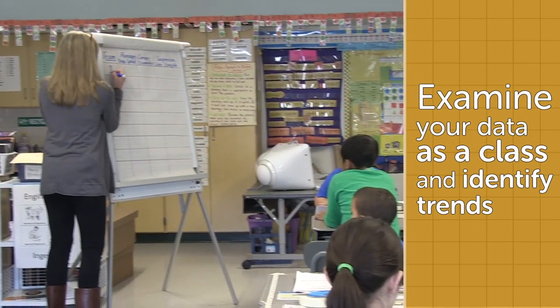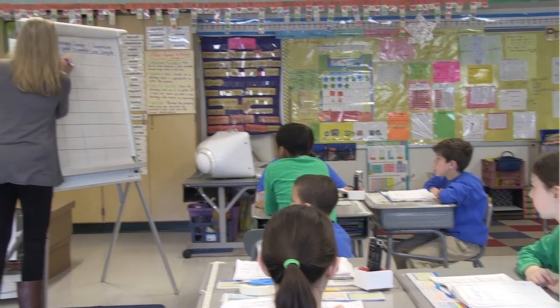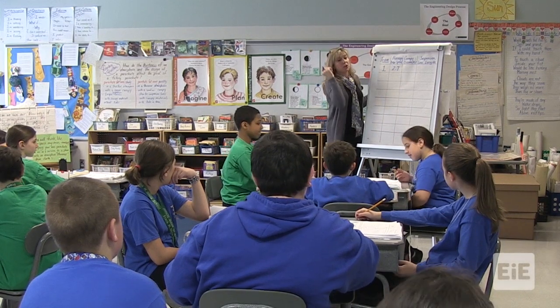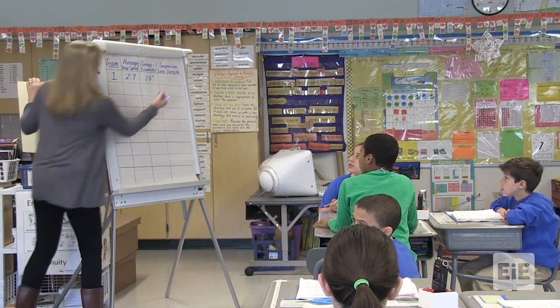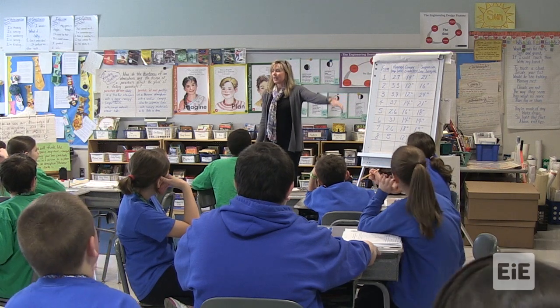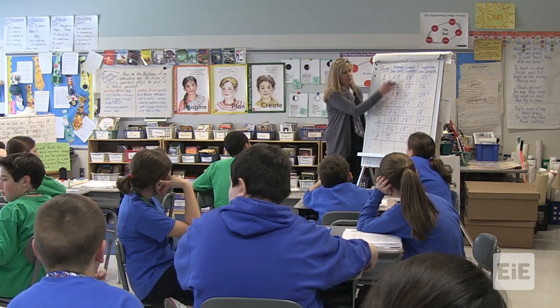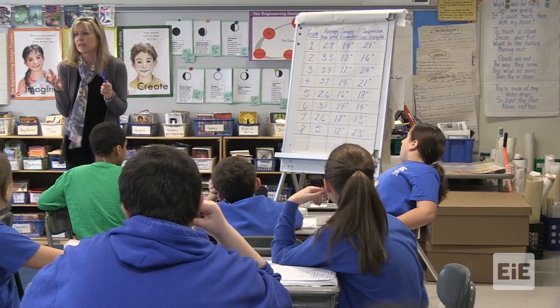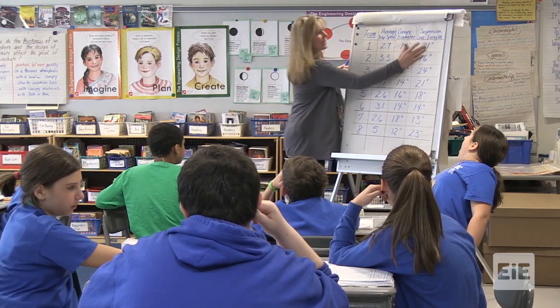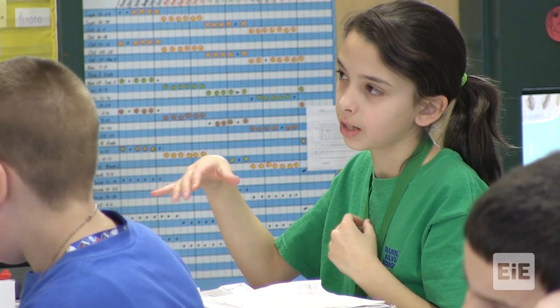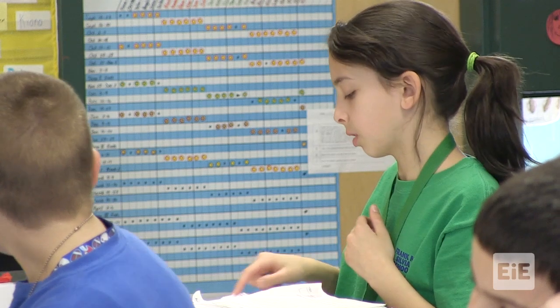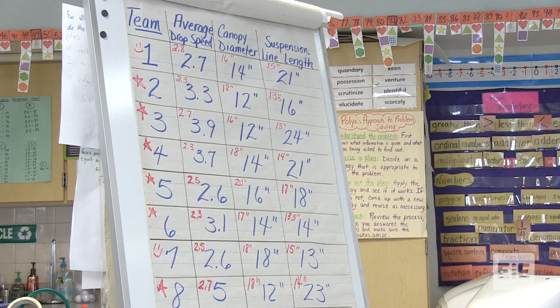Jean collects each team's average drop speed, canopy diameter, and suspension line length. Team 1 reports an average drop speed of 2.7, canopy diameter of 14 inches, and suspension line length of 21. Jean asks the class to look at the data for a minute and discuss with their team whether there's any connection or correlation between canopy size, suspension line length, and drop speed. One student, Noor, observes: 'I noticed that the people who had shorter suspension lines and bigger canopies had lower average drop speed.'